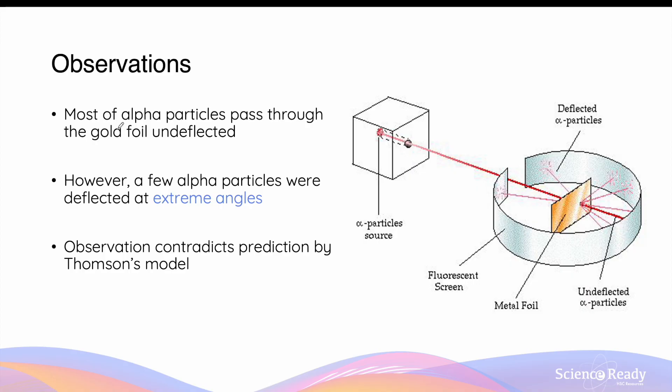However, in the experiment, Geiger and Marsden observed that most of the alpha particles pass through the gold foil undeflected, but a few alpha particles were deflected at extreme angles rather than small ones. In this diagram, you can see that majority of the alpha particles pass through in a straight line, shown by this red line here. And a few of them are deflected at various angles, including these ones here, which are deflected at very large angles.